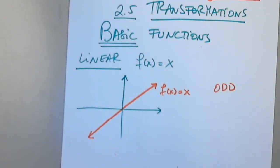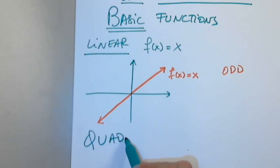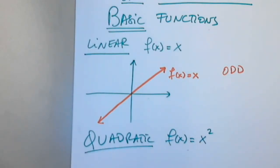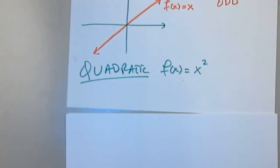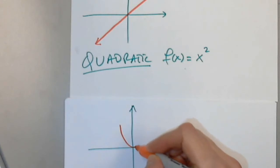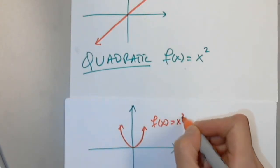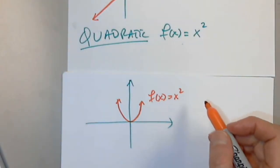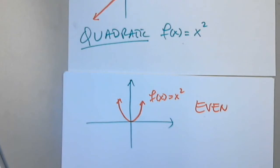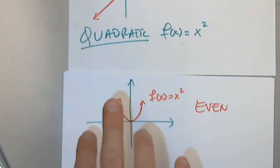The simplest possible quadratic function is f of x equals x squared. You may have graphed it before. What is the graph called? A parabola. Is f of x equals x squared odd, even, or not symmetric? It is even — symmetric with respect to the y-axis.